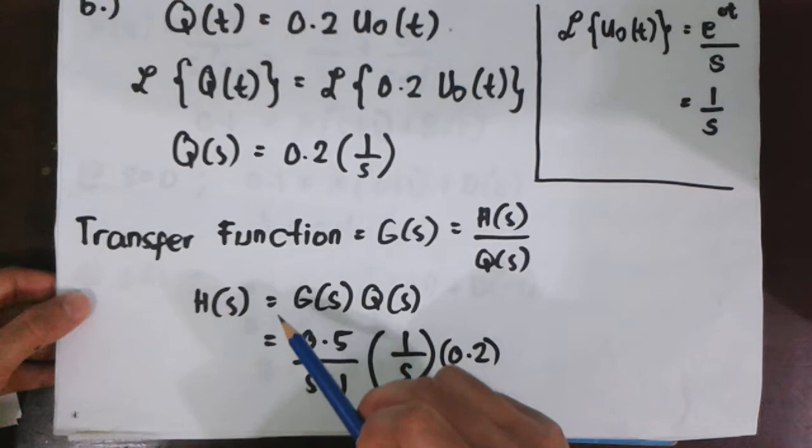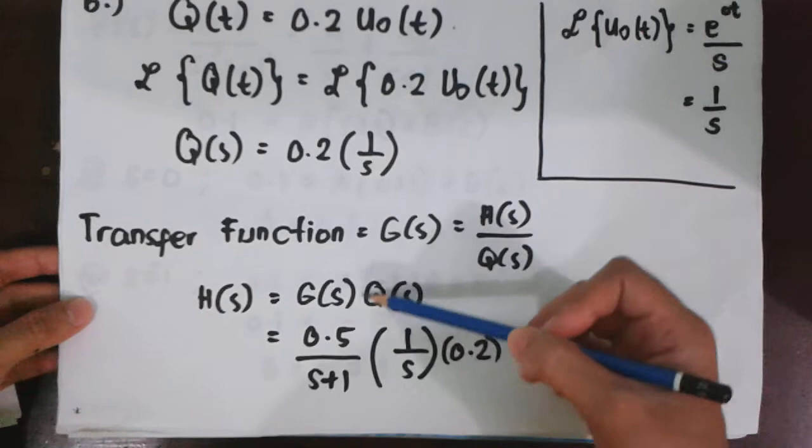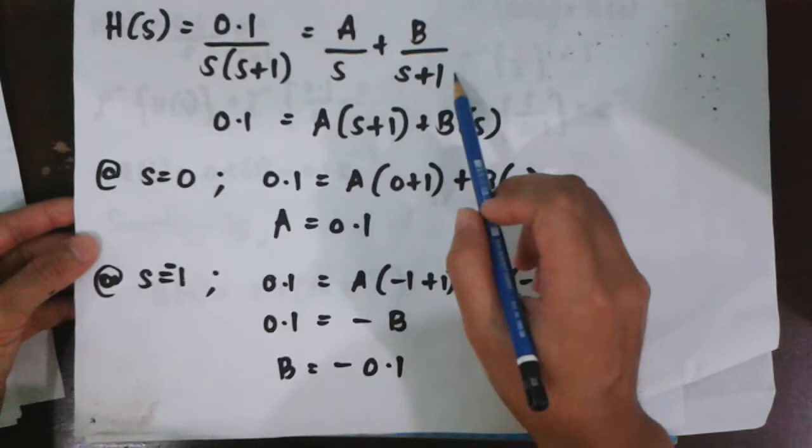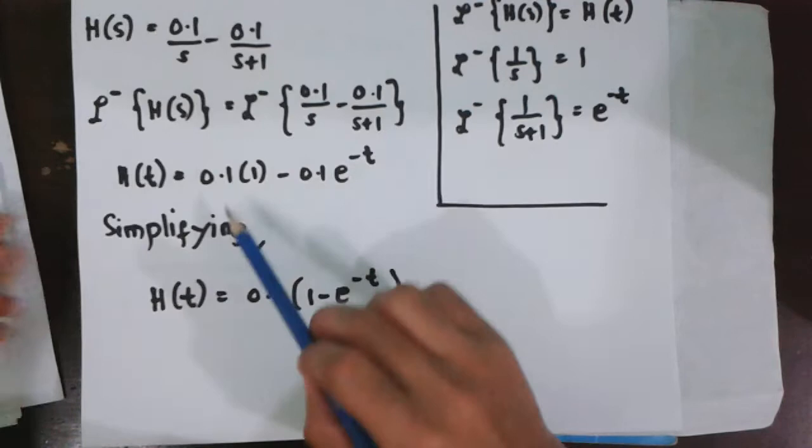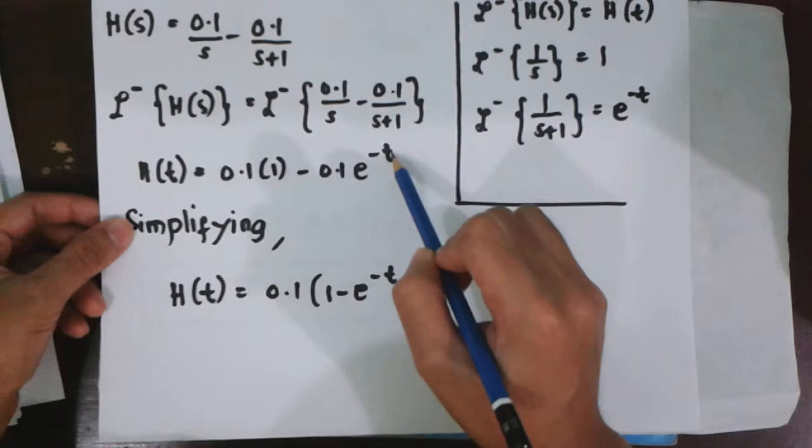Combining this equation and the transfer function of the process, we obtain H(s), which is the transfer function multiplied by Q(s). And then, applying partial fraction, we get the value of A as 0.1 and B as -0.1. Taking the inverse Laplace, we arrive at this complete solution.